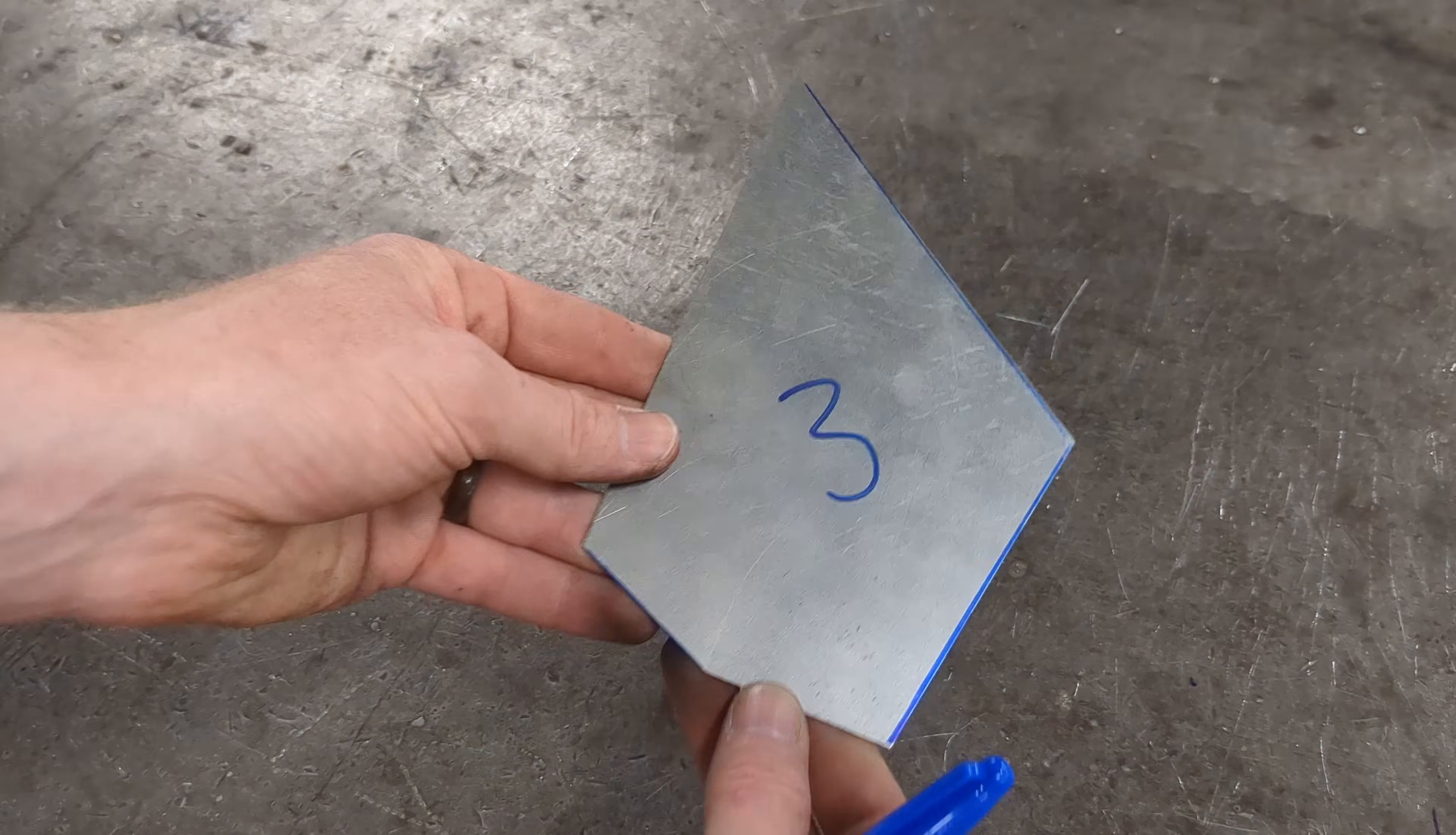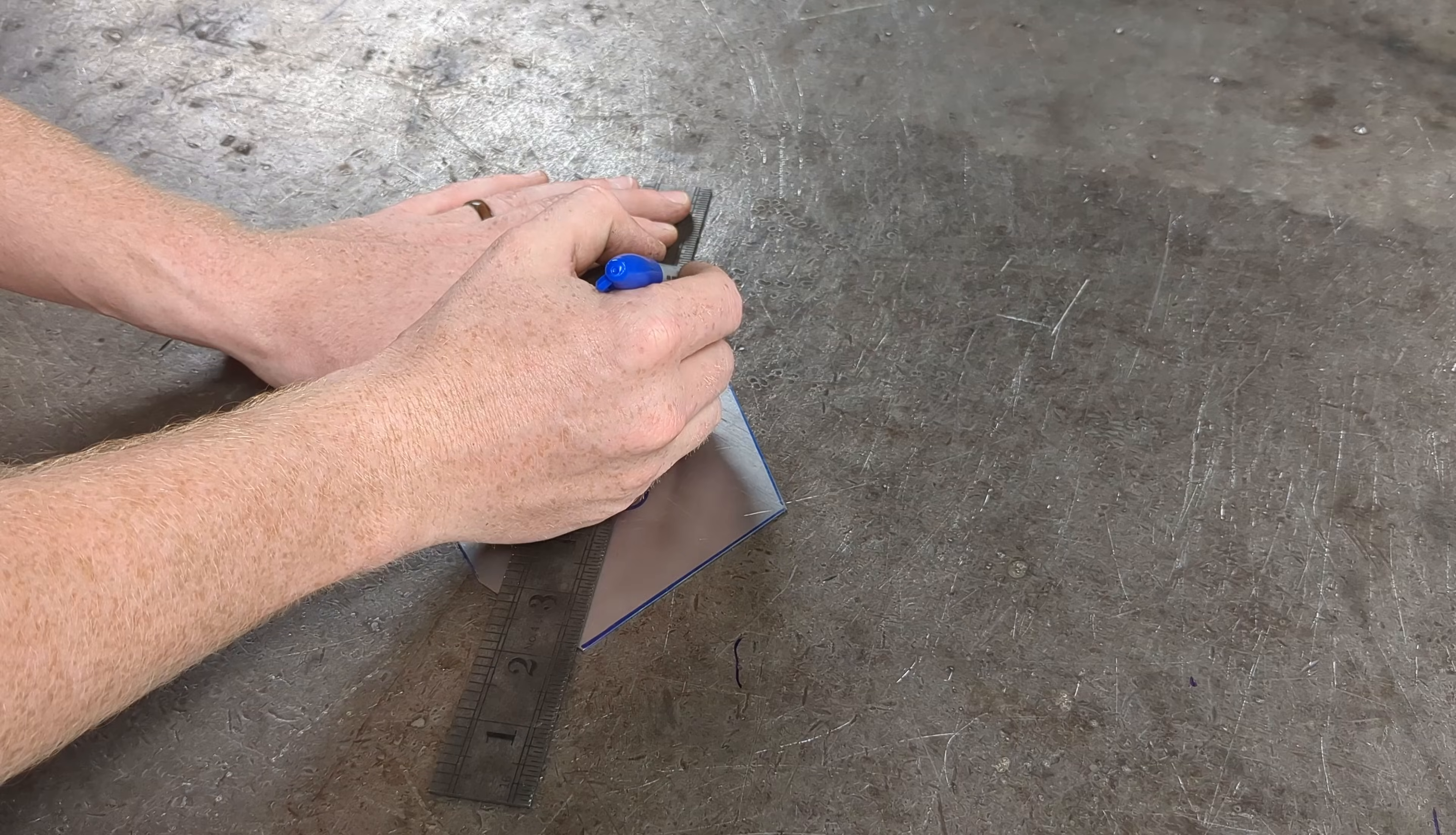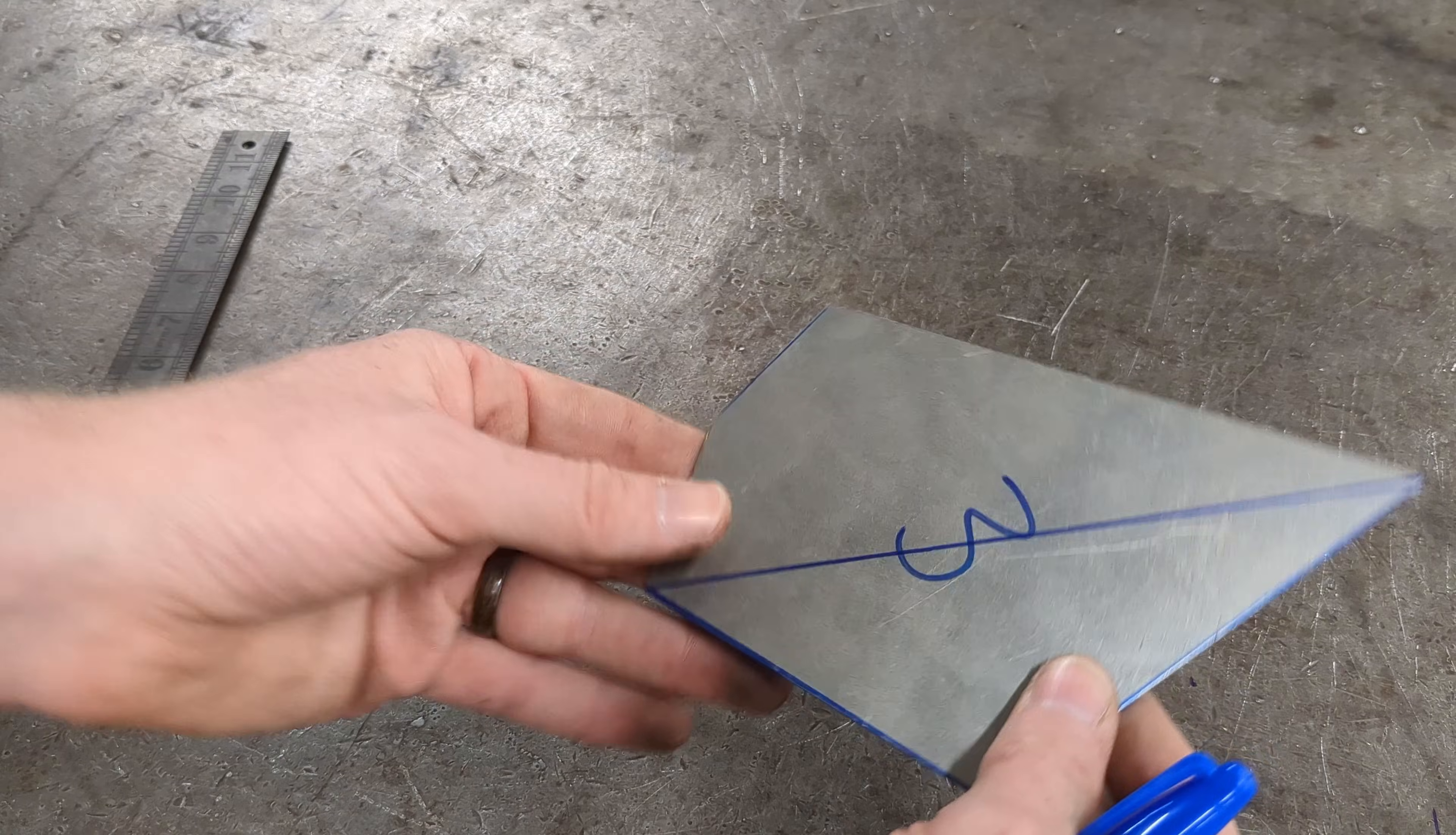Next, you'll need to mark the lines you'll be using to bend your parts into the point of a star. Use a straight edge and mark a line from the top point to the bottom point of your pattern. For your tab, measure in from the bottom left side.